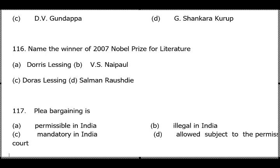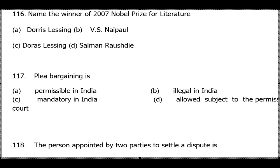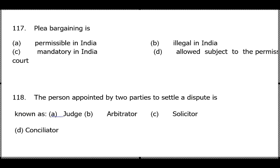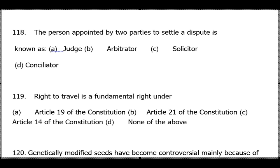Plea bargaining — answer is option D: it is allowed subject to prior permission of courts. Next question: person appointed by two parties to settle a dispute — answer is option B (arbitrator).